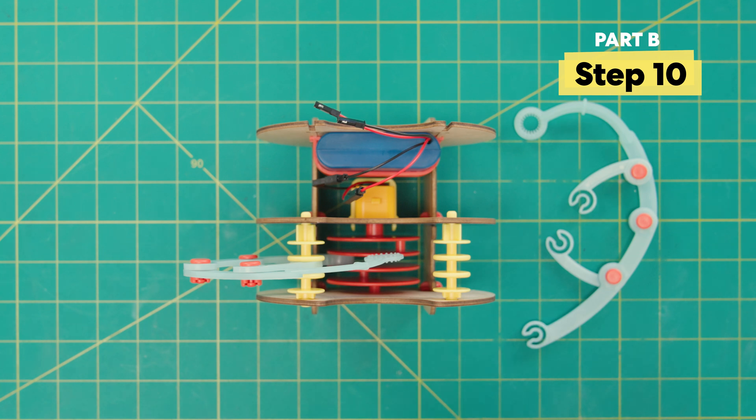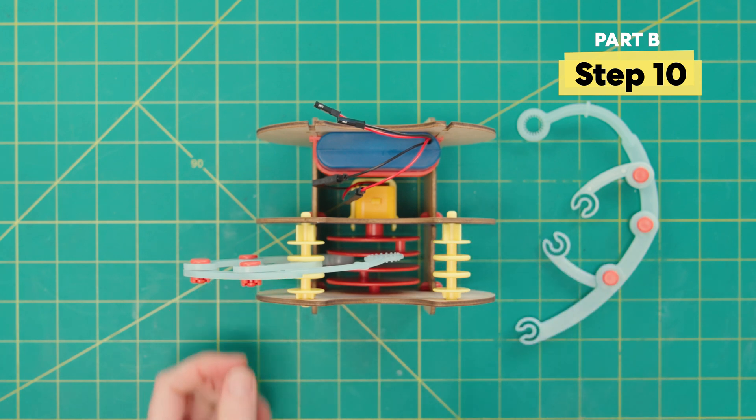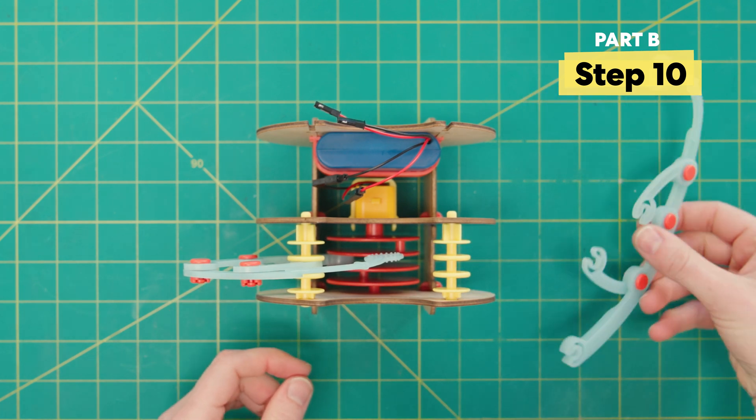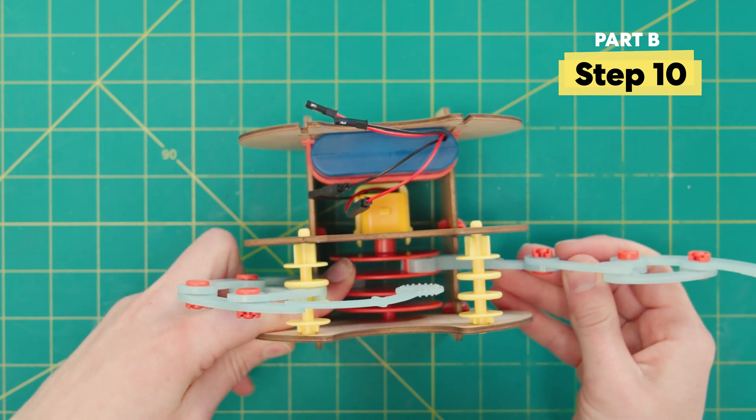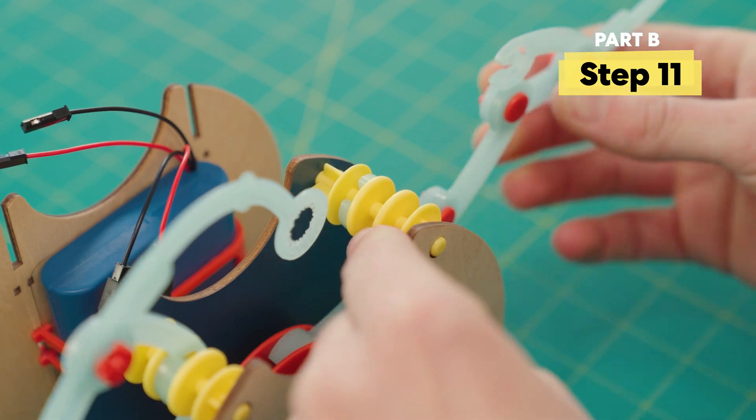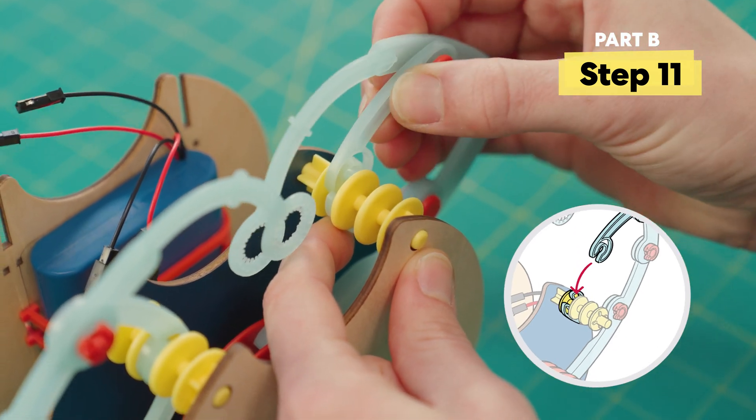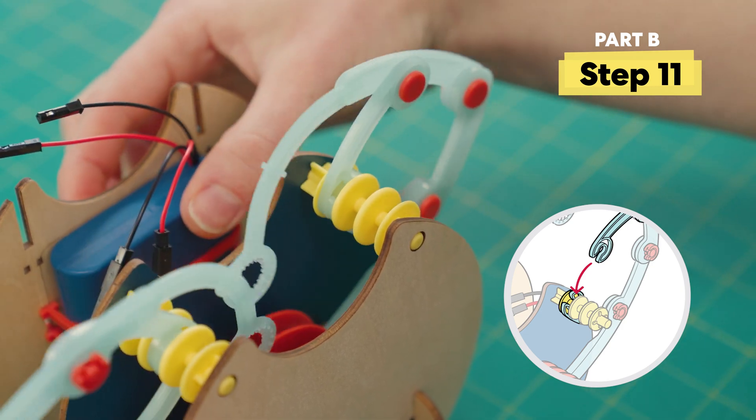All right, next we're going to do the exact same thing, but we're going to attach it on the other side into the slot that's closest to the motor. Go ahead and press that arm onto the cam. And those two little tiny, tiny arms, we're going to put onto the yellow piece. Again, in the same slot. Test it out. Yeah! Isn't that cool?